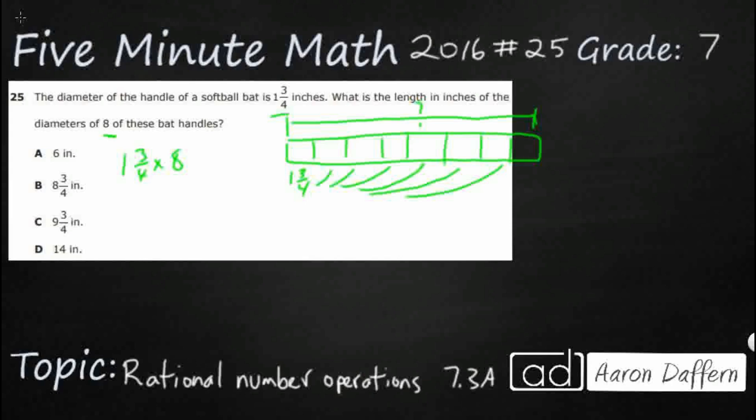The easiest thing to do is we need to take this 1 3/4 and turn that into an improper fraction just so we can do fraction times fraction. How we change a mixed number to an improper fraction is we multiply the whole number by the denominator. So 1 times 4, that's going to be 4. That means we've got one set of 4. Then we want to add the numerator. So 4 plus that 3 is going to be 7, and then we keep our denominator. So 1 3/4 is the same as 7/4.